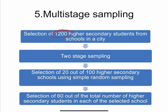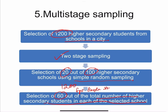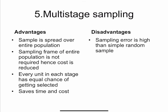For example, to select 1200 higher secondary school students from a city, we follow two-stage sampling: first select 20 out of 100 schools using simple random sampling, then select 60 students from each of those 20 schools, making 1200 as the desired sample size. The selection within each school may be systematic, simple random, or stratified random sampling. Using more than one type of sampling at different stages is called multi-stage sampling. Advantages: sampling is spread over the entire population, a sampling frame of the entire population is not required, cost is reduced, and every unit at each stage has equal chance of selection. Disadvantage: sampling error is higher compared to simple random sampling.